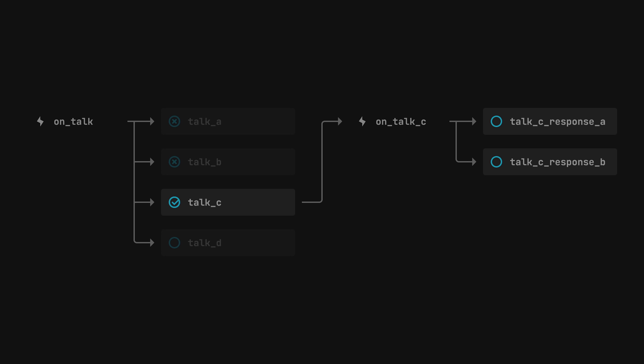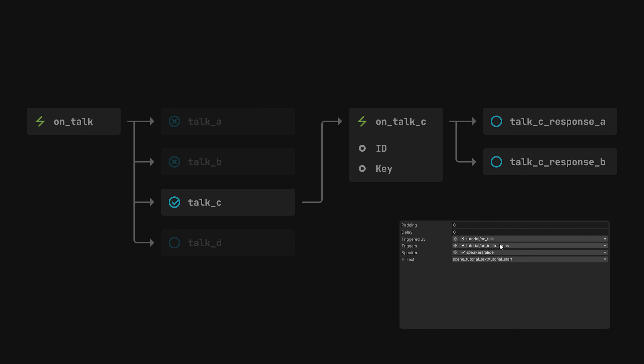One thing I struggled with was how to identify an event. I didn't want to use strings, but other options like creating a scriptable object per event also didn't seem plausible. This is where the EventEntry comes in. It's a basic entry whose purpose is to identify an event. So instead of using strings, I'm using IDs of entries. Just like FactEntries, they also contain a human-readable key that allows me to easily search for them and understand what they mean.